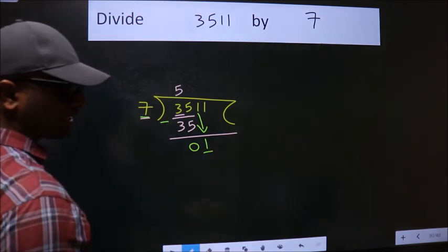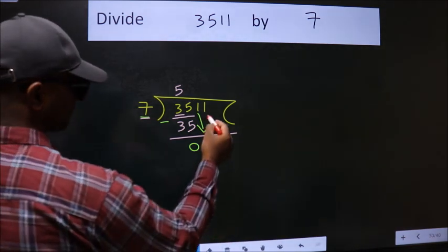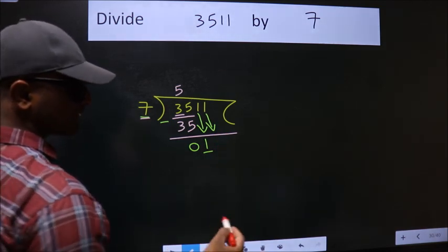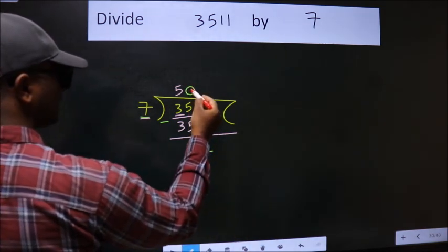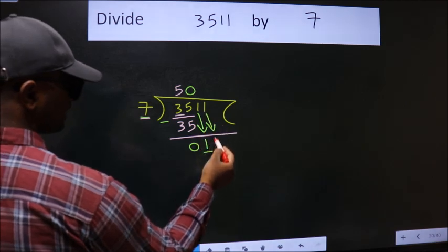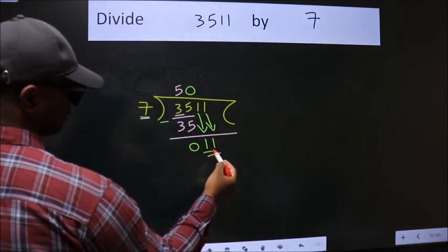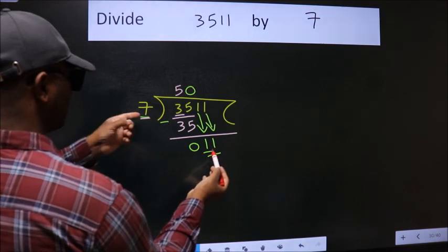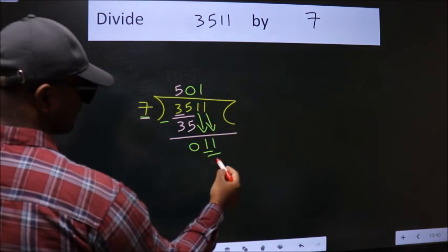So we should bring down the second number. And the rule to bring down the second number is put 0 here. Then only we can bring down this number. So 11. A number close to 11 in the 7 table is 7 once, 7.